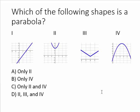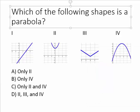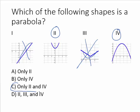Looking at our answer choices: one could not be it because it's a straight line, and we know that parabolas are a curved shape, so one doesn't work. Two should work because it's a nice U shape. Three is a V shape, so that's not going to be it — it's not curved at the bottom, it should be curved. And four also works. So two and four are the correct answer choices, which gives us C.